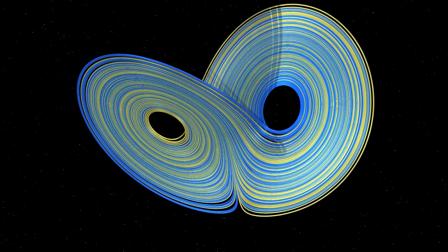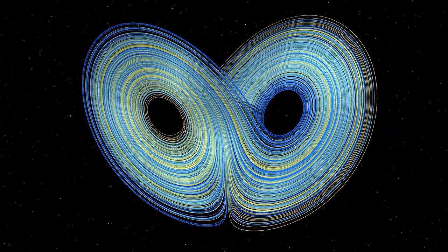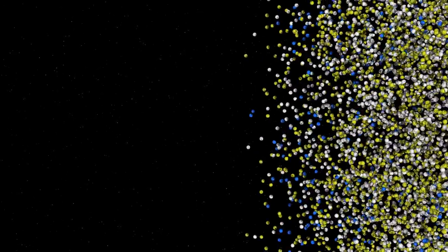Instead of observing just two trajectories, let's look at many more. Look at all these balls, each one of them representing a simplified atmosphere.